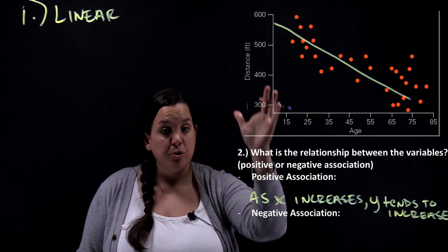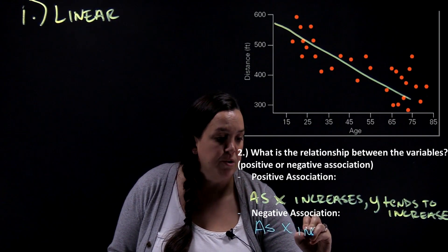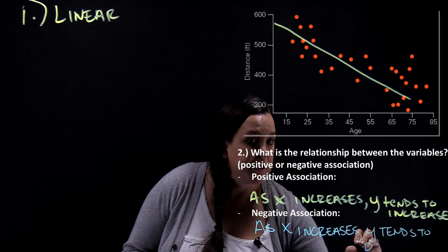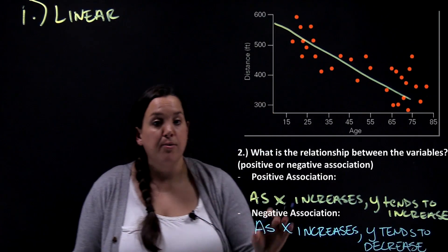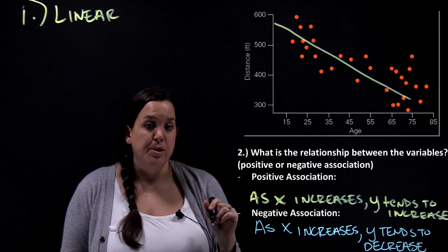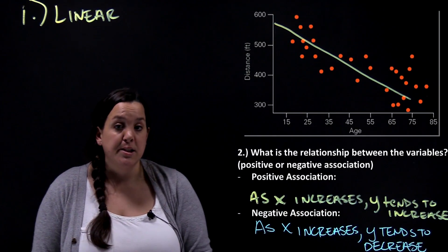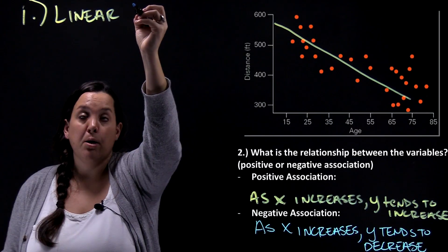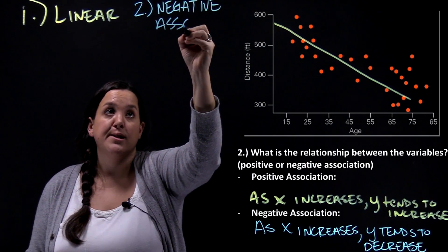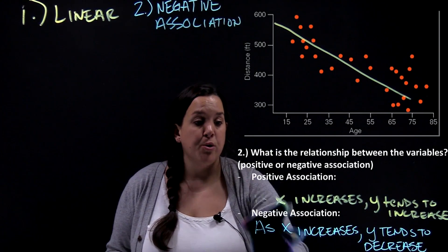For a negative association, you still read from left to right — as x increases — but this time y tends to decrease. Notice the word 'tends': that doesn't mean it happens all the time, but overall the pattern tends to increase for a positive association and tends to decrease for a negative one. For this scatterplot looking at age and distance, we have a negative association because as x increases, y is tending to decrease.